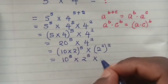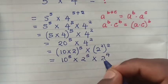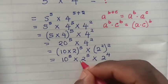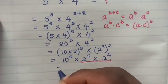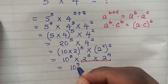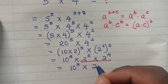So here, power of 5 inside the bracket will be 10^5 × 2^5 × 2^4.